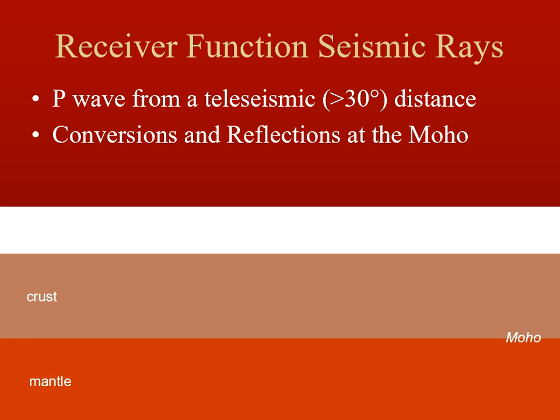I want to describe the seismic ray paths for the receiver function. What we need to envision is that these P waves are coming from teleseismic distances — relatively far away, greater than 30 degrees. Because of that distance, the wave is primarily traveling through the lower mantle for much of its path, and so it's a fairly clean signal when it comes up to the station.